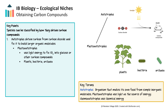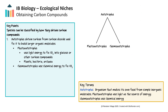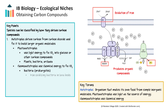Some archaea perform anoxic photosynthesis, producing ATP but not generating oxygen or glucose in the process. Chemoautotrophs also fix carbon dioxide, but instead of light, they use the energy from chemical reactions. These are all prokaryotes, such as iron-oxidizing bacteria in lava beds, who harvest electrons from iron to generate ATP.